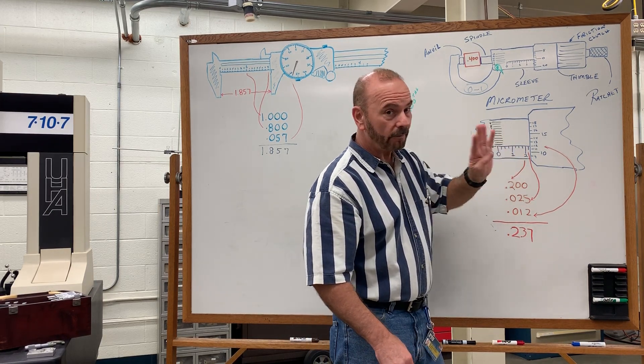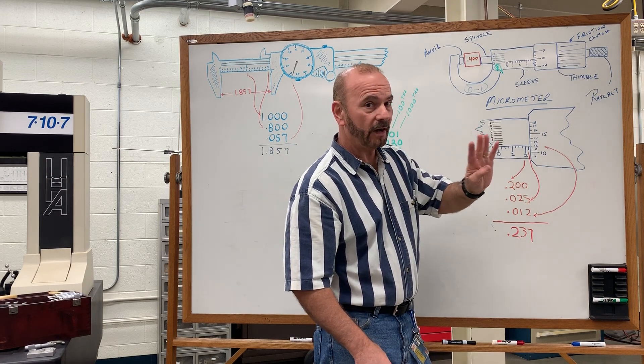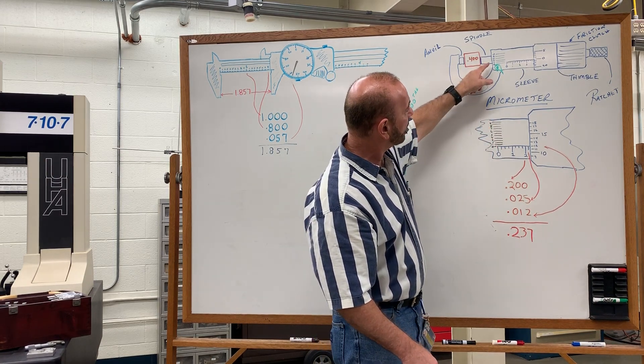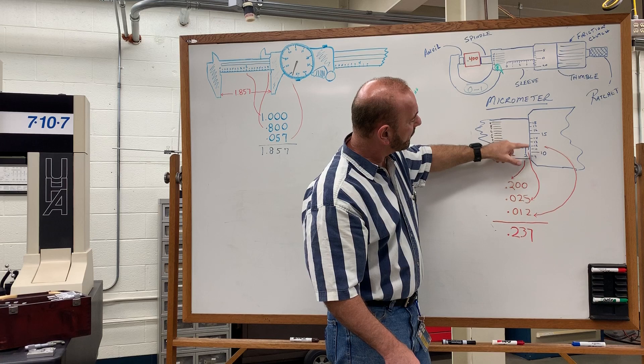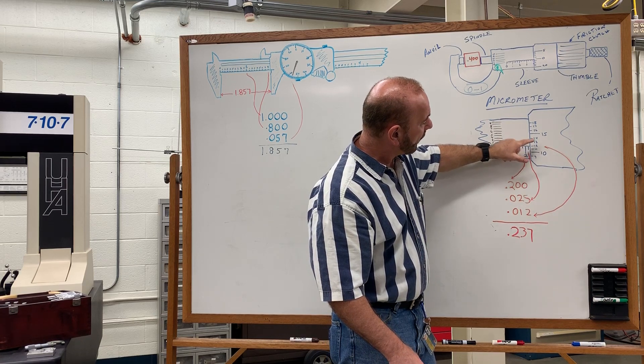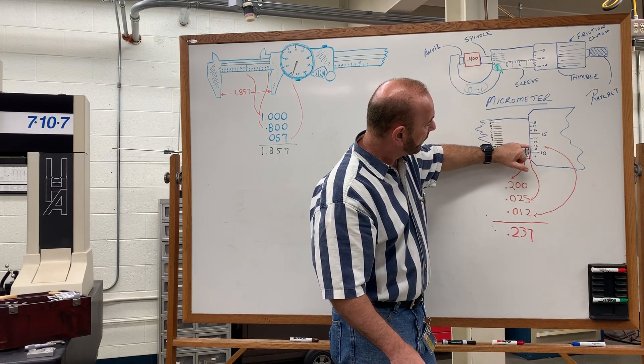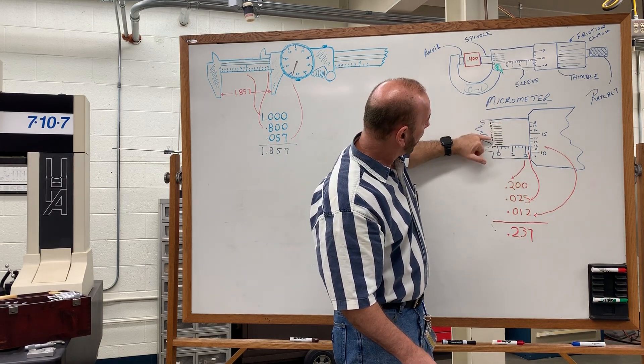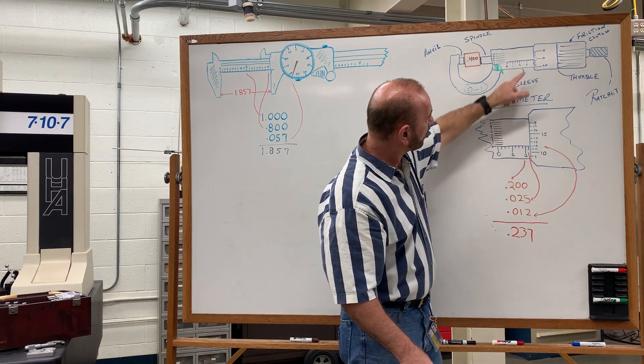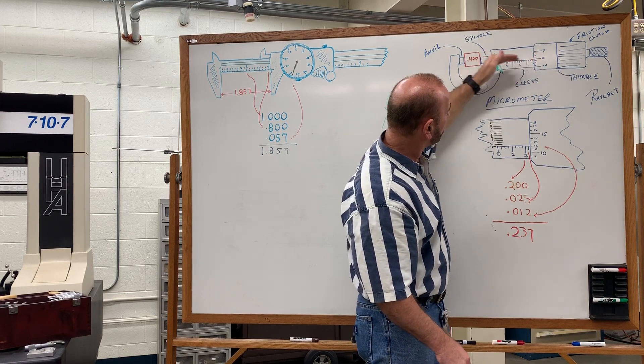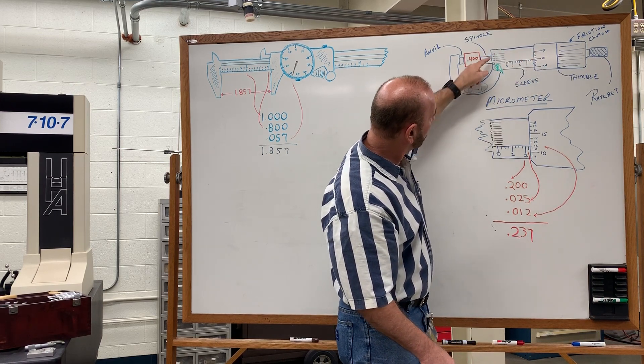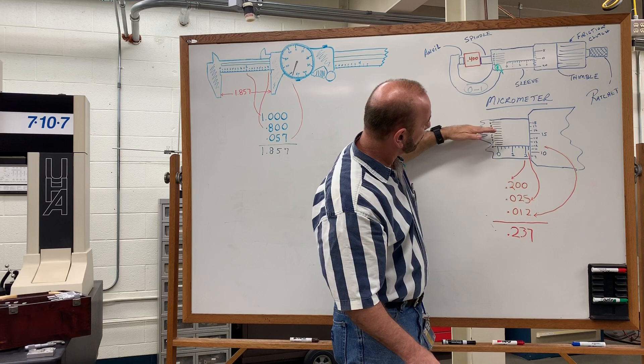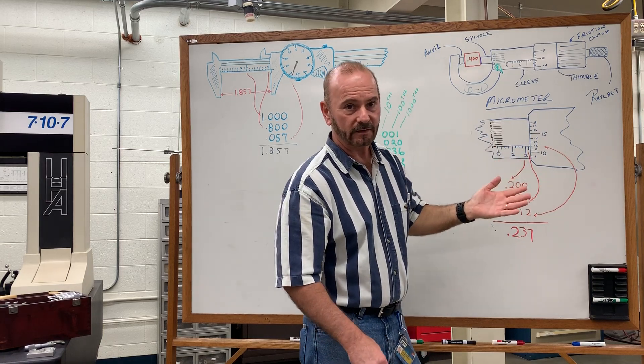Micrometers can read to the fourth place decimal. We're not going to cover that in depth, but the fourth place decimal scale is here. And typically what you would do is you would read it to whatever closest number it came to. You wouldn't round up, you would round down, and then you would go to the side scale here and see which one of these lines lined up perfectly with one of the lines on this scale. And that value that was on the side scale gets transferred over as your fourth place digit.